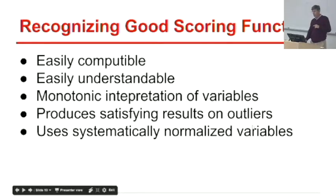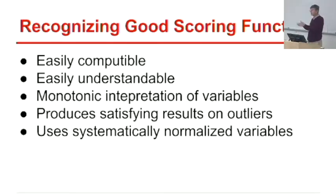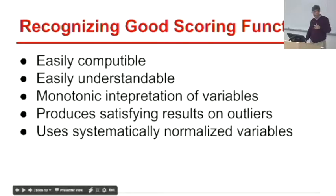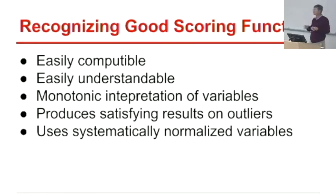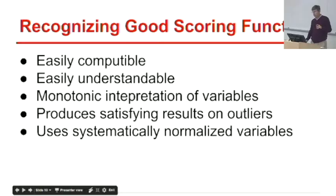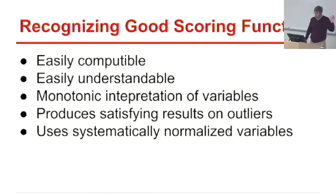It would be good if outliers you already know about — like teachers who were fired — score badly by your measure. Usually you have some notion of what kinds of things are likely best and worst, and you'd want your scoring function to do sensible things accordingly. The scoring function should probably also be built from normalized variables rather than raw counts over a big range.